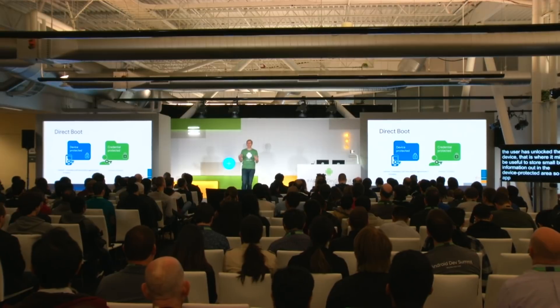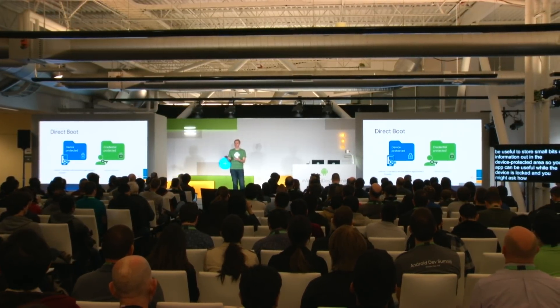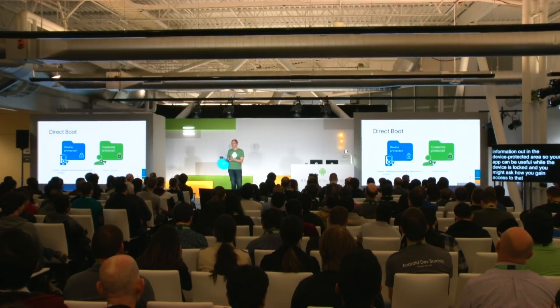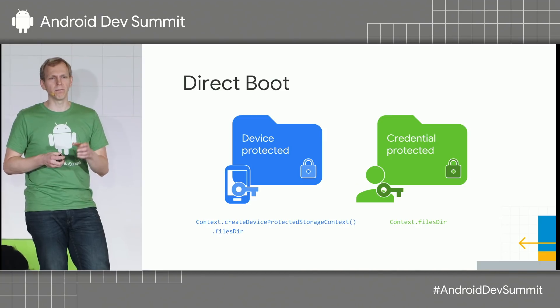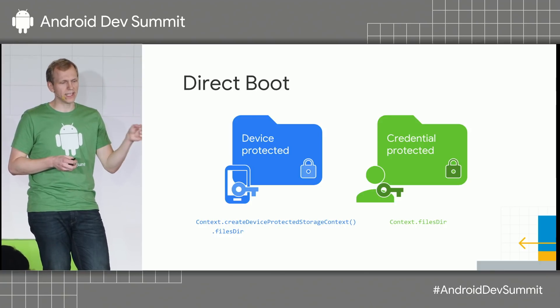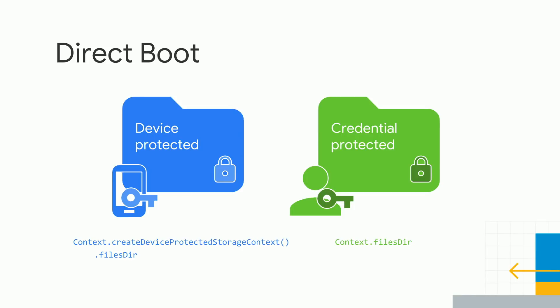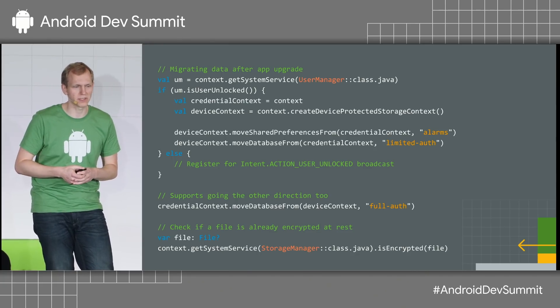If you find a place where you'd like to run before the user has unlocked their device, it might be useful to store small bits of information in the device protected area. To access the device protected area, there's a method on context called createDeviceProtectedStorageContext — a bit of a mouthful. It returns a different context where file APIs point at device protected storage rather than credential protected storage.